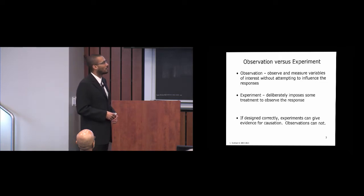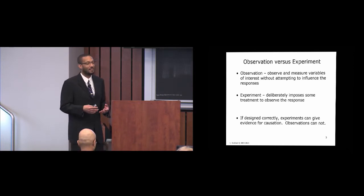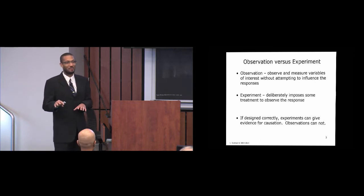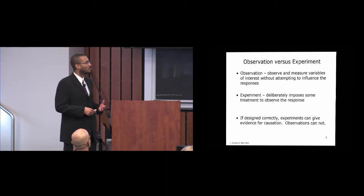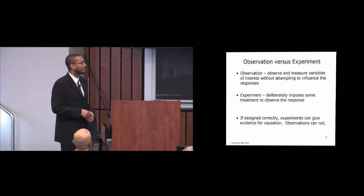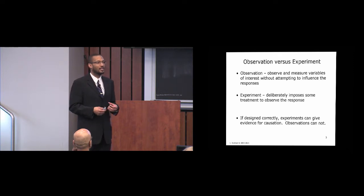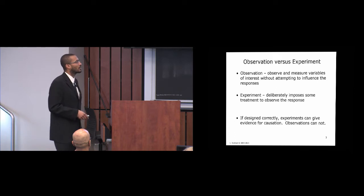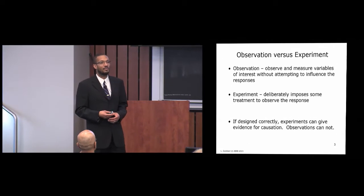We want to distinguish between an observation and an experiment, which the public often mixes up. In an observation, the goal is to observe and measure variables without trying to influence the response — you have no control over the system. In an experiment, you deliberately impose some type of treatment in order to observe a response. If designed correctly, an experiment can give evidence for causation; an observation cannot.